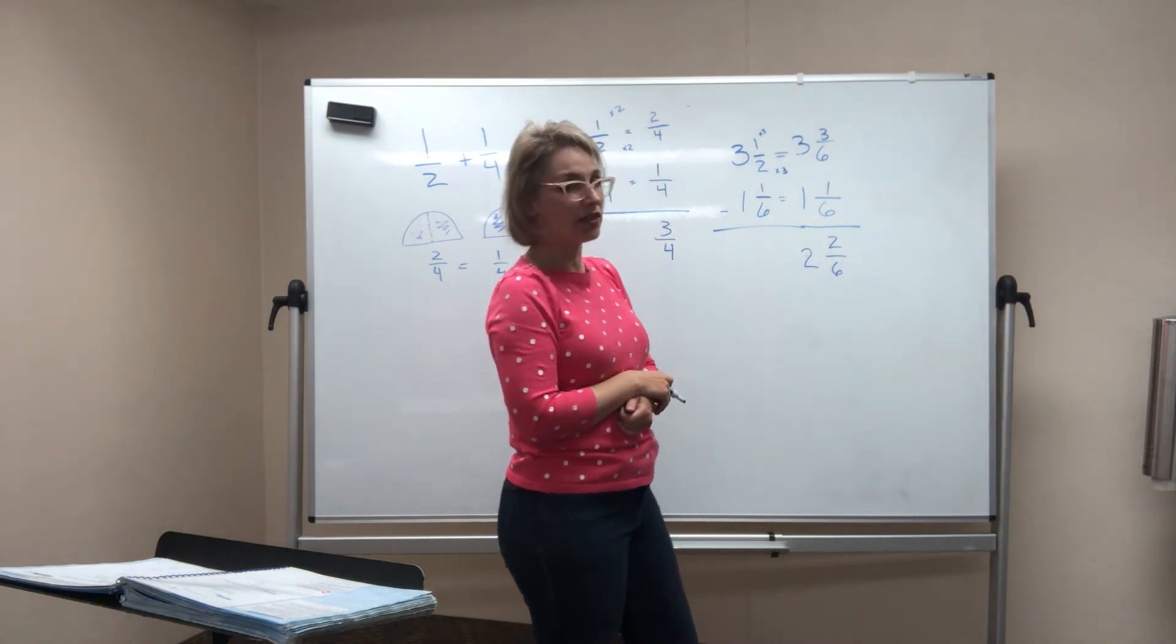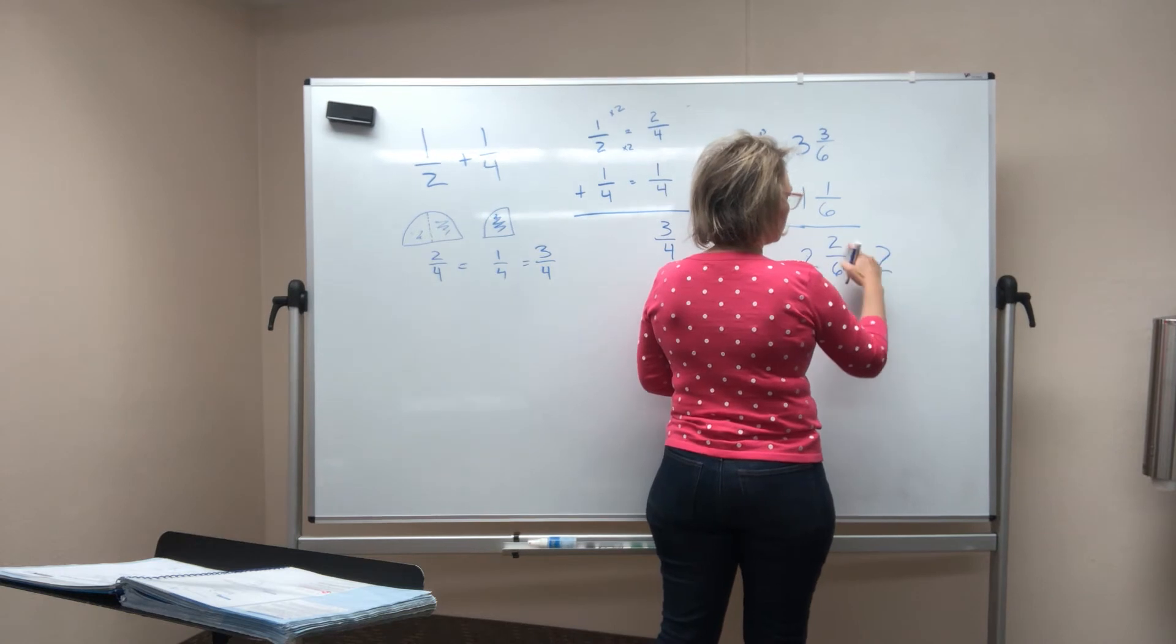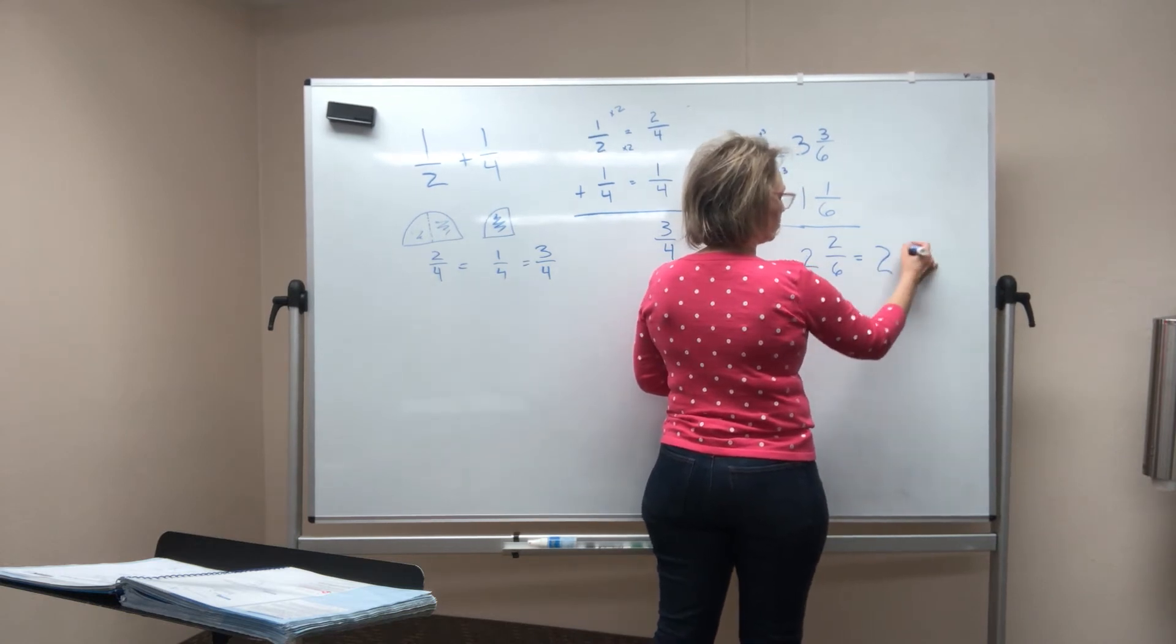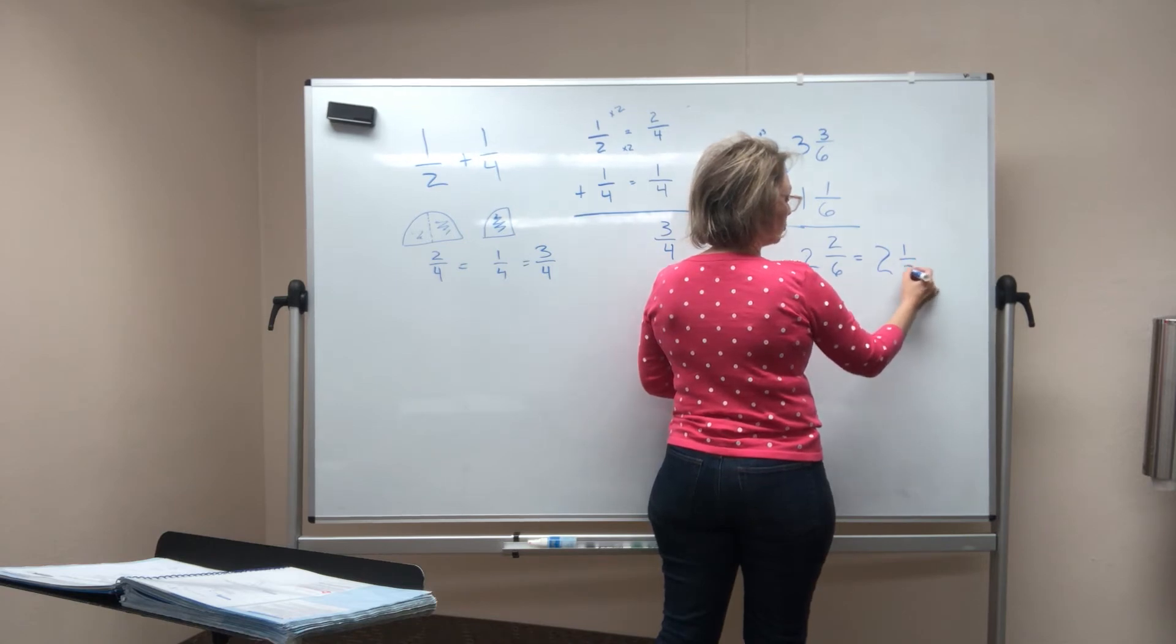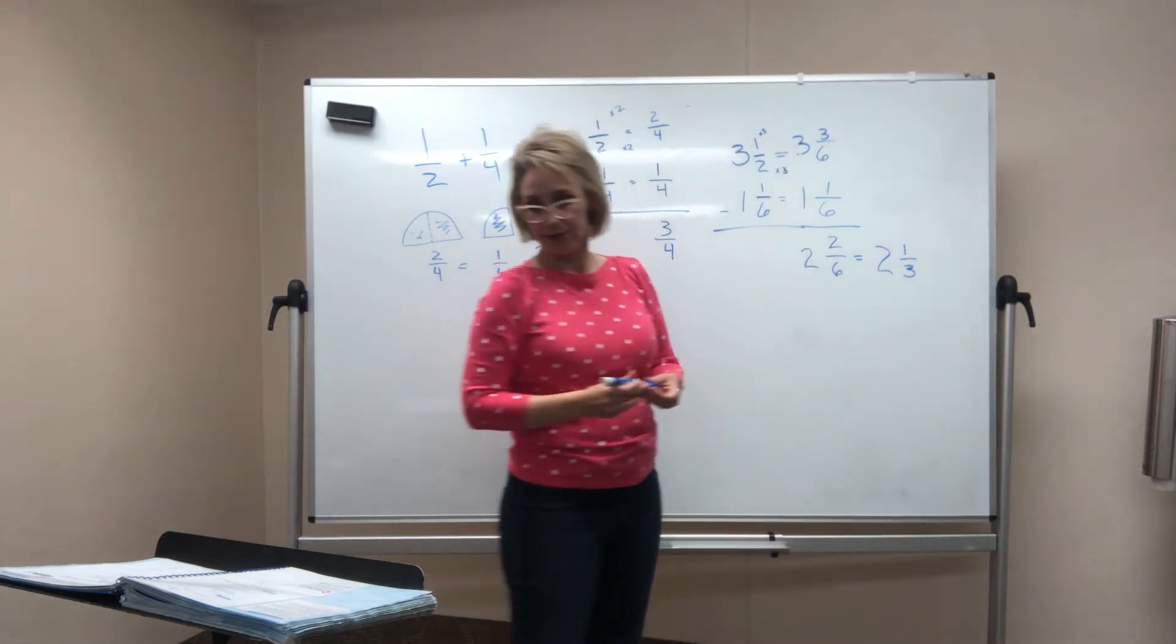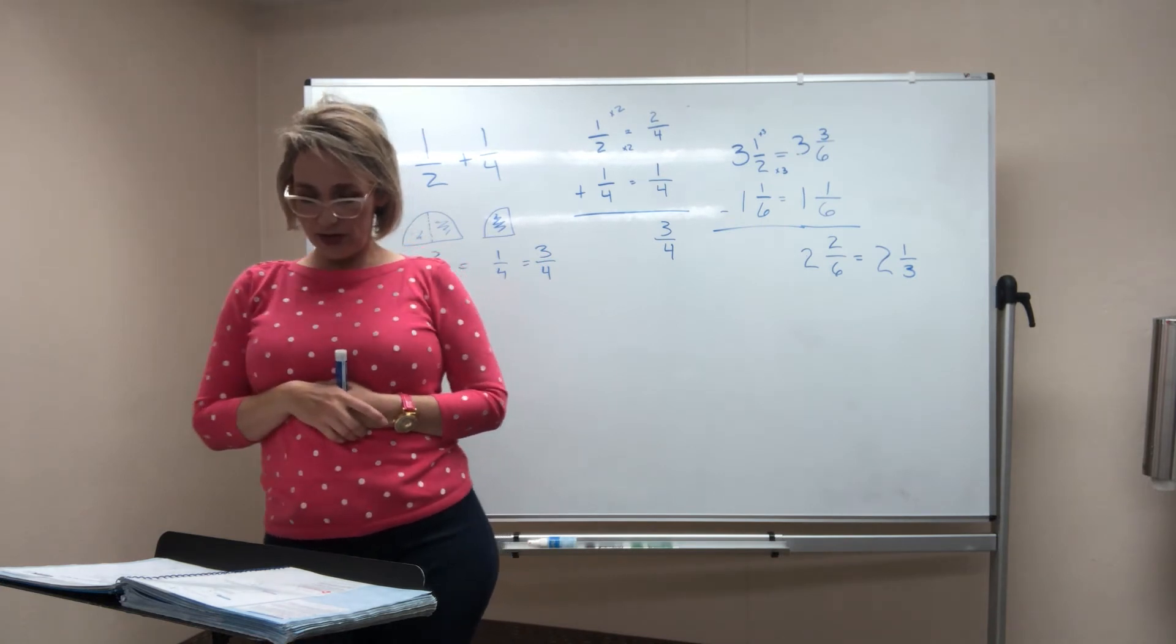Now to really get the right answer here, I need to reduce this fraction. What does two sixths reduce down to? I can divide both the top and the bottom by two, and I end up with two and one third. And that is indeed what you will see on example three that they have done.